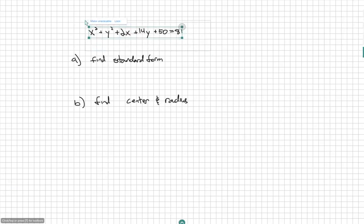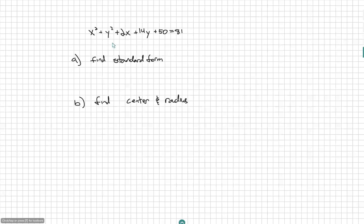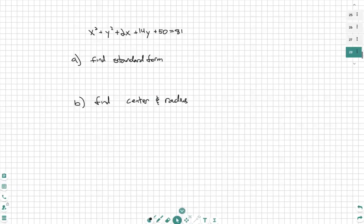The first thing we have to notice is that this is going to be a circle. We can kind of see the x squared and the y squared, so we're going to have a circle of sorts. So we're going to find the standard form of a circle.